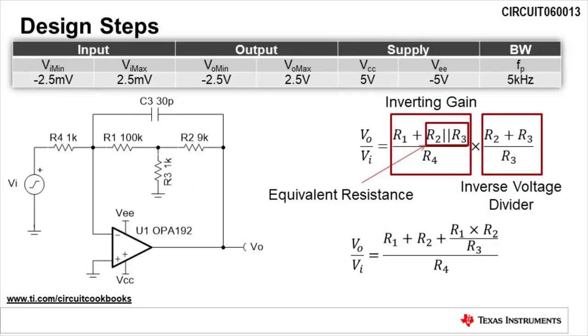The design goal for this circuit is to convert an input voltage from negative 2.5 millivolts to positive 2.5 millivolts to an output voltage from negative 2.5 volts to positive 2.5 volts. This design uses a plus and minus 5 volts supply and has a bandwidth of 5 kilohertz.